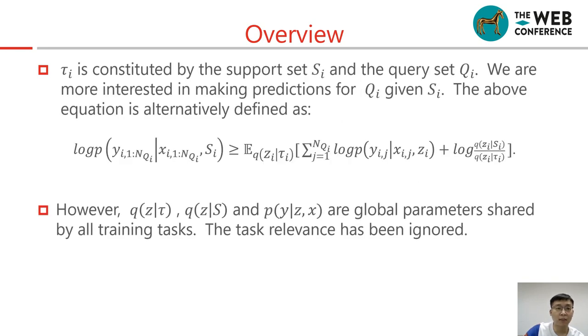Tau i is constituted by the support set and the query set. We are more interested in making predictions for qi given si. The ELBO equation is alternatively defined as follows. However, both inference model and decoder are global parameters shared by all training tasks. The task's relevance has been ignored.